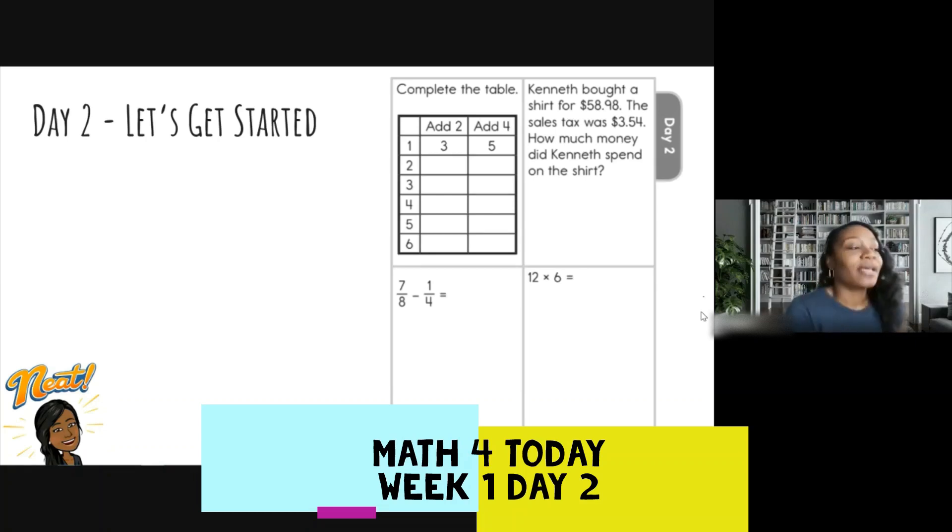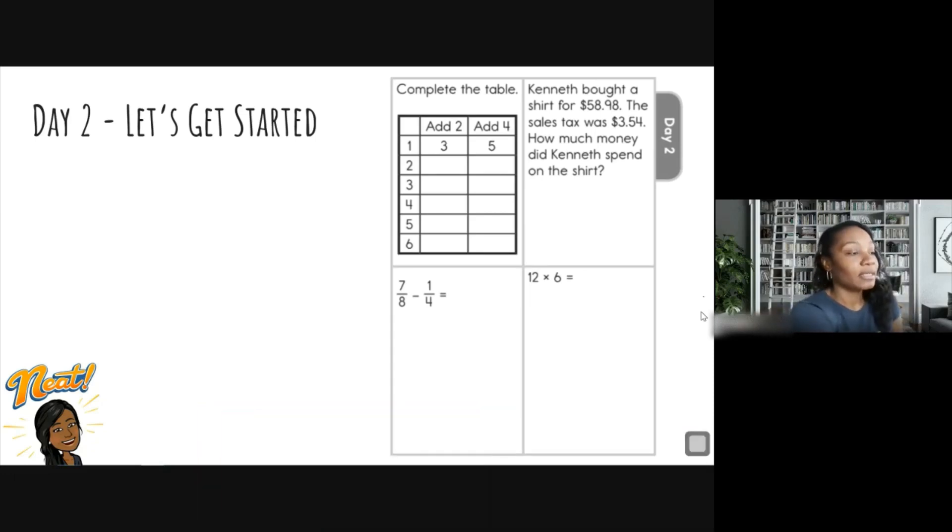This is something we need to work on. So we just follow these rules, we'll be able to complete this table. Easy peasy. So let's look at the table. So we have one, two, three, four, five, six. And up top, it's telling us to add two and then to add four. So I'm looking for a pattern already. And I see one.